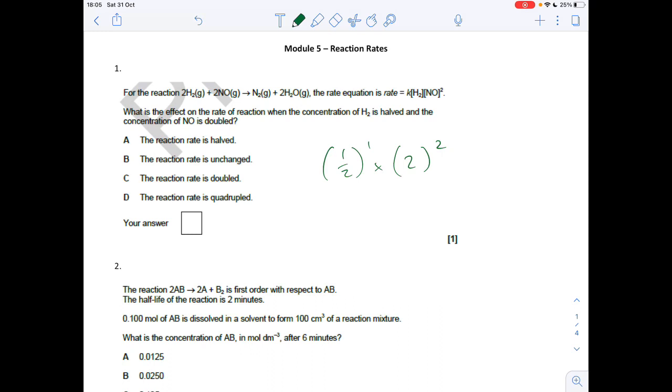Question 1: the overall effect on the rate if we half the hydrogen concentration. If we look in the rate equation, it's first order with respect to hydrogen, so half to the power one, multiplied by the NO concentration squared, so two to the power two. The overall effect of all of that is times two, so it was option C.